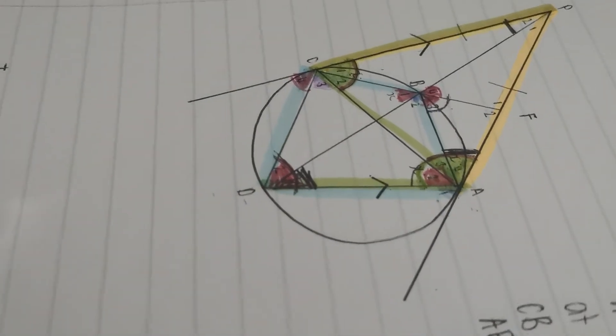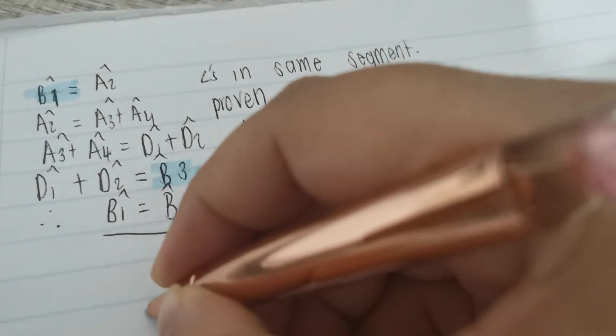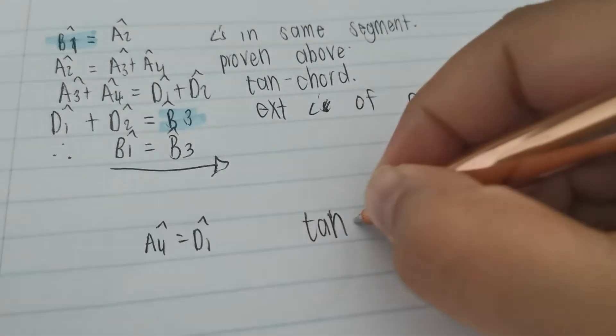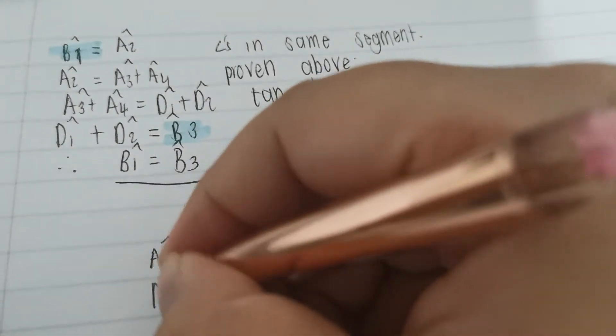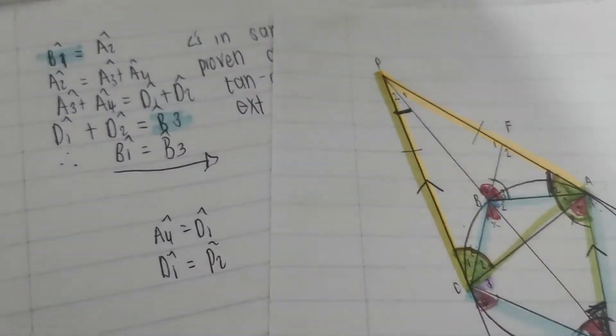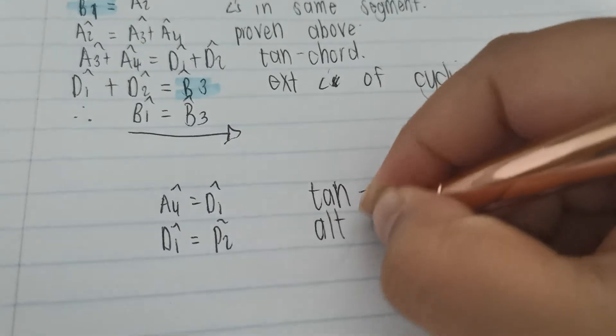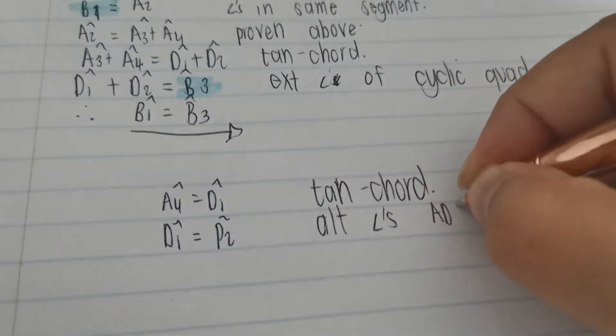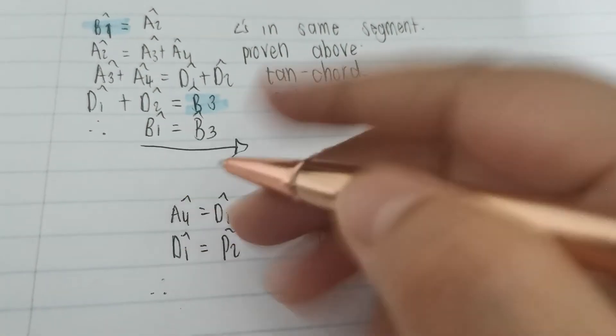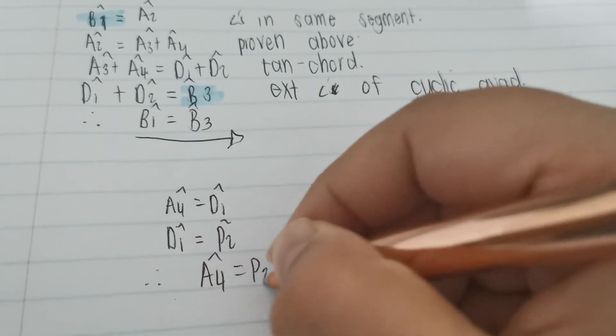So we said A4 is equal to D1, tangent-chord. Then we said D1 is equal to B2. Let's bring the diagram back for you. A4 equal to D1, D1 equal to B2, alternate angles. Therefore, because the D1 is common in both of us, A4 is equal to B2.